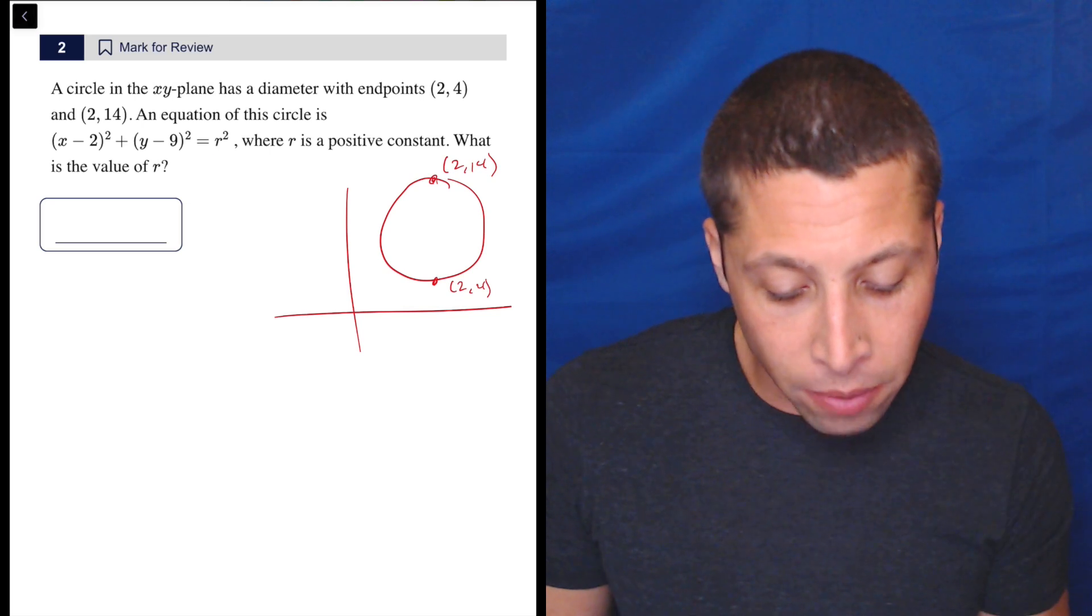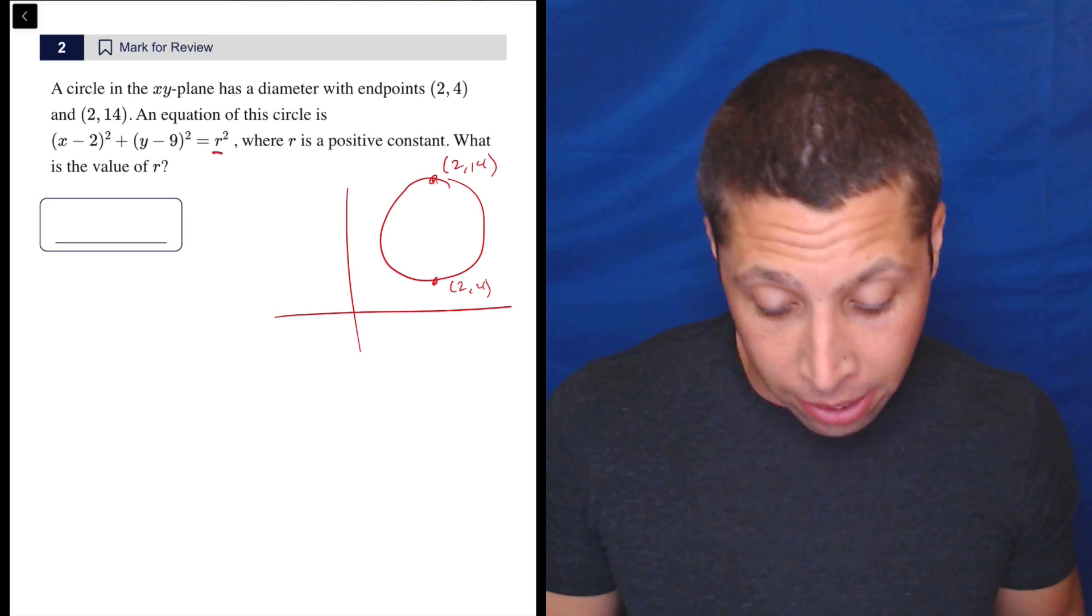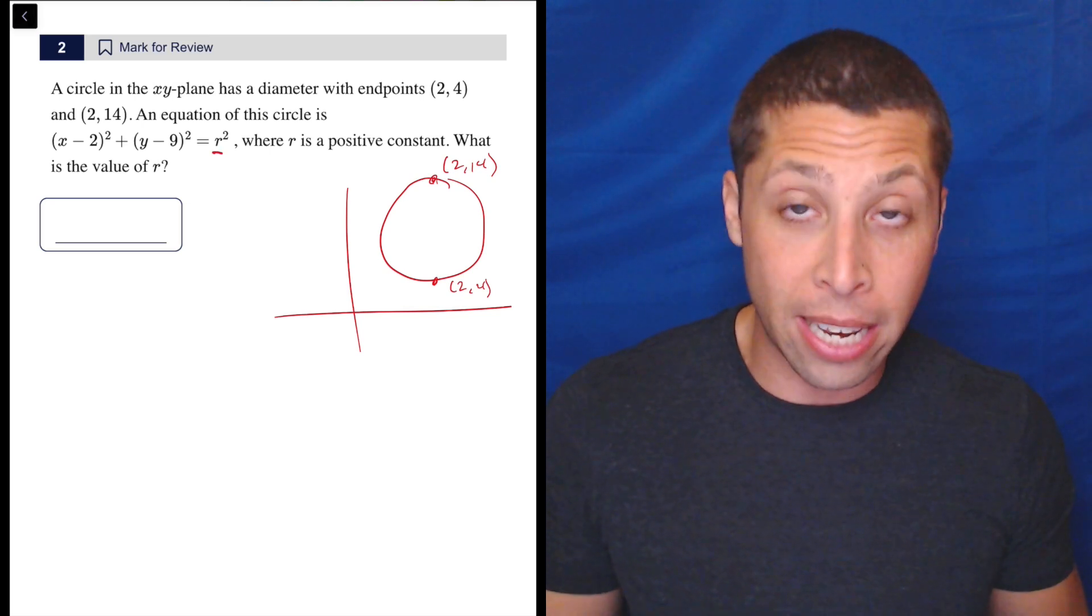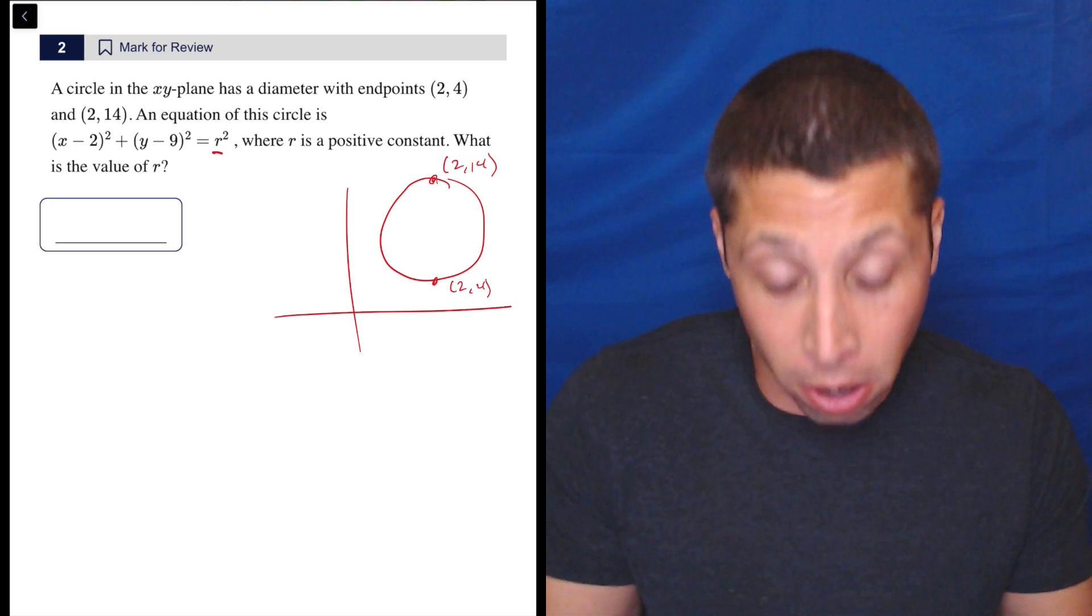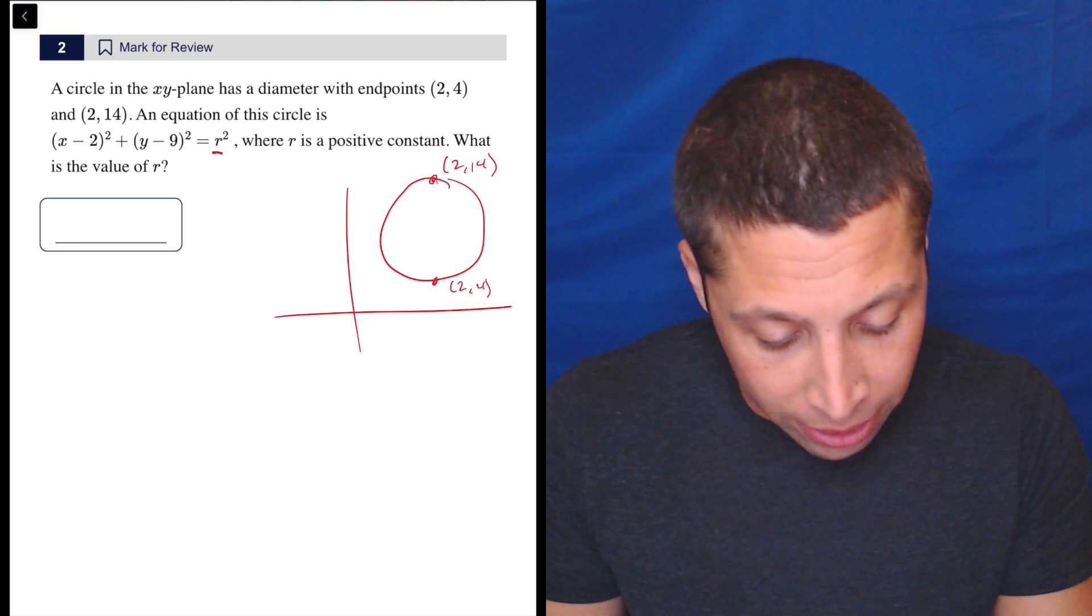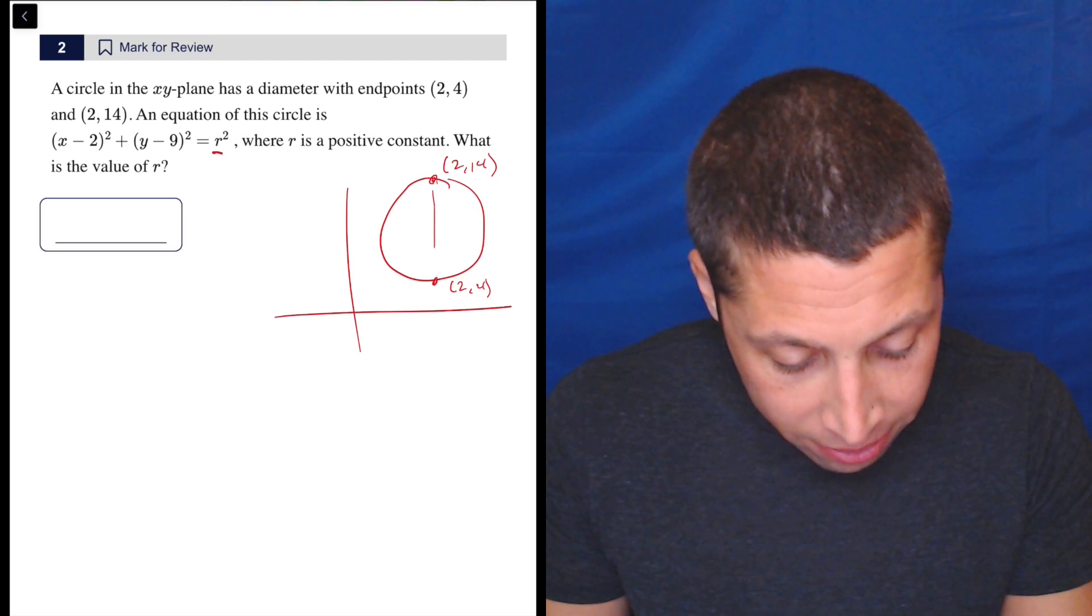right? We're trying to find the R, which they don't explicitly say, but that's the radius, right? We should know the circle formula enough that we can do that and just kind of see the R is the radius, plus it's R, right? So what's the radius? Well, the diameter is 10, right? How did we get from 4 to 14?